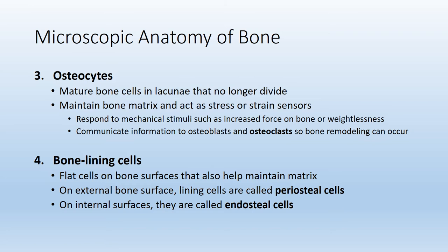Bone lining cells, depending on where they are located, can change their name accordingly. These will be found within the periosteum and within the endosteum. Within the periosteum, we can call them periosteal cells, and when they are found in the endosteum, we call them endosteal cells.